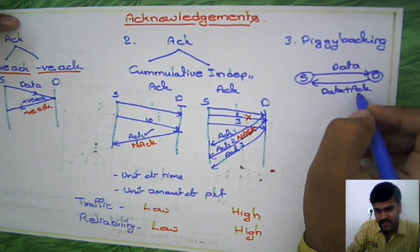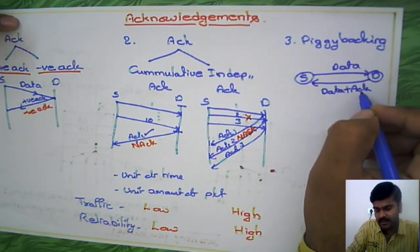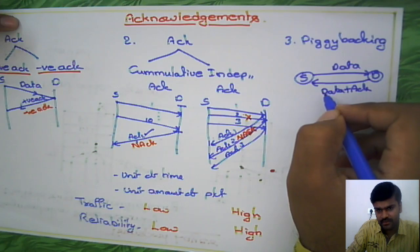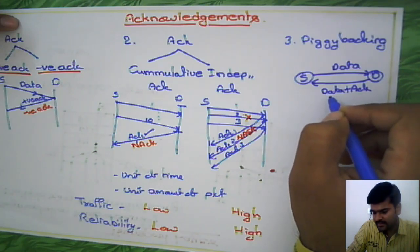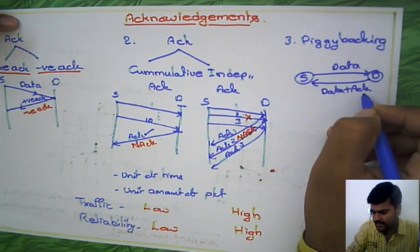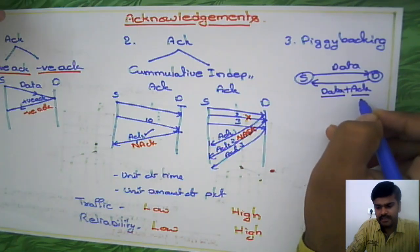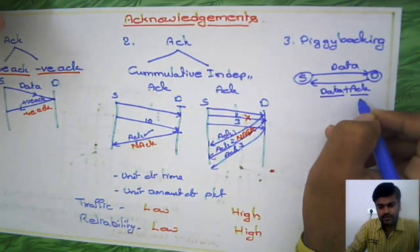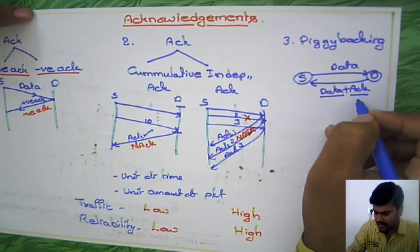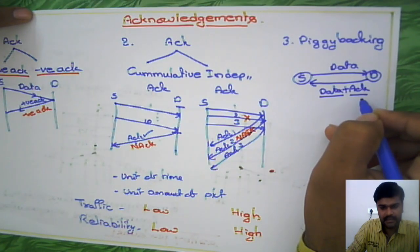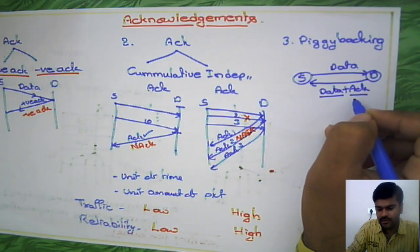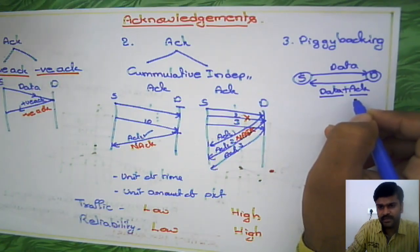When the destination is going to give the acknowledgement and it also has data to transfer to the same source, that data plus the acknowledgement together will be sent as a single packet. This is what we call piggybacking — attaching the acknowledgement to the outgoing data packet to the same source.